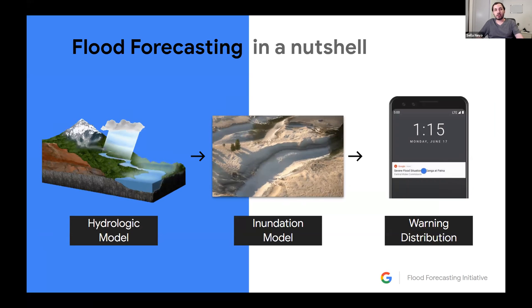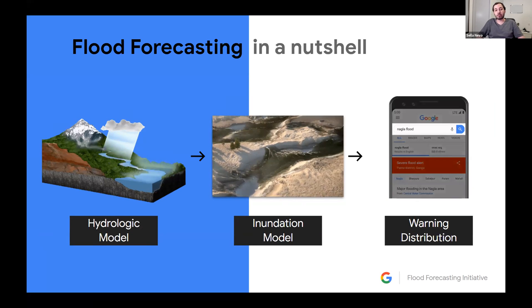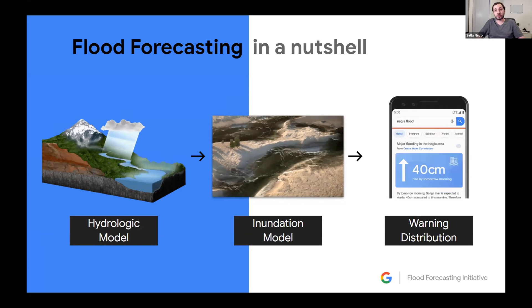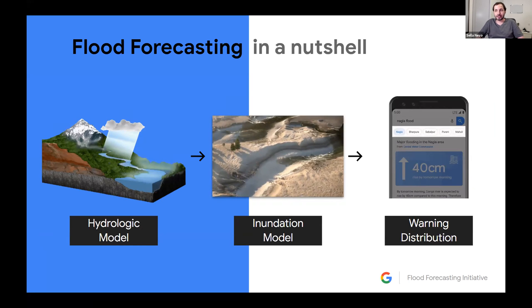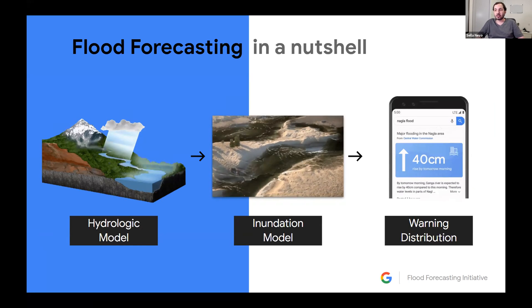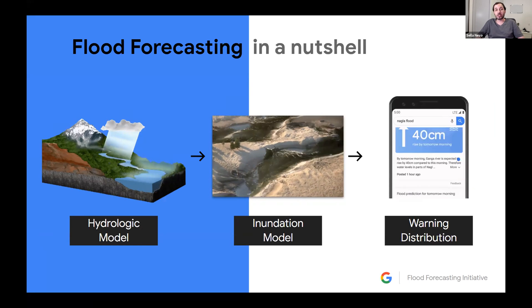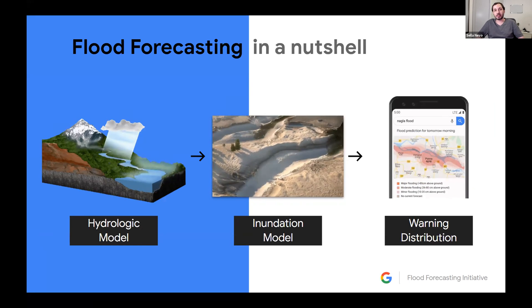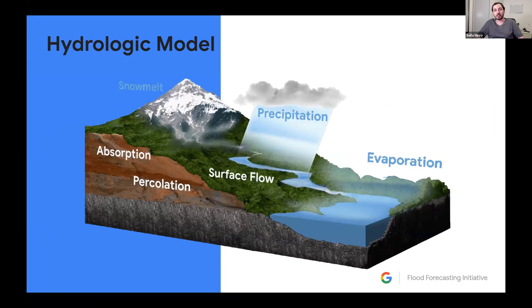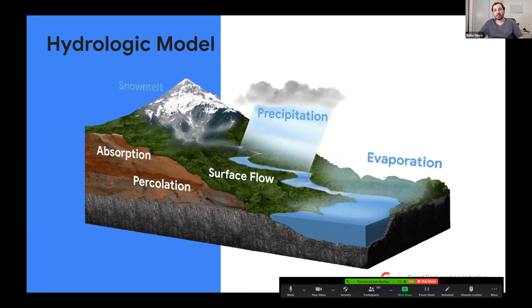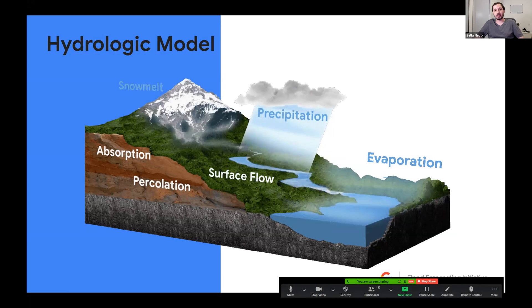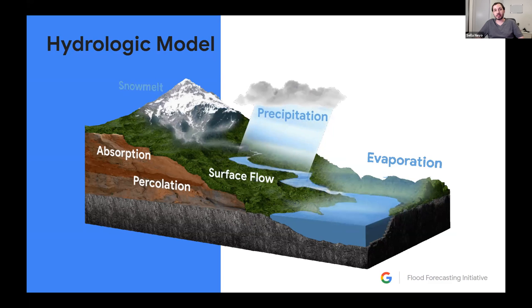I want to focus on three important components of such a system. The first will be the hydrologic model. The second will be the inundation model. And the third component will be the warning distribution at the end. Let's dive straight into the first one. The hydrologic model accepts various inputs, including precipitation, soil moisture, soil radiance, and more, and produces as an output a forecast for either discharge or sometimes even water level throughout the river.